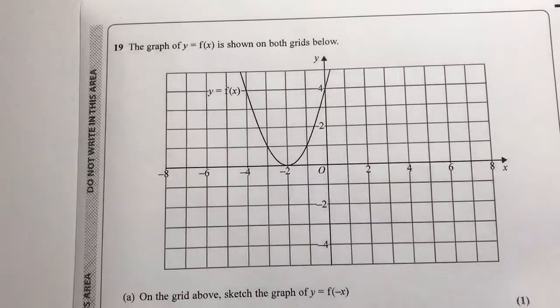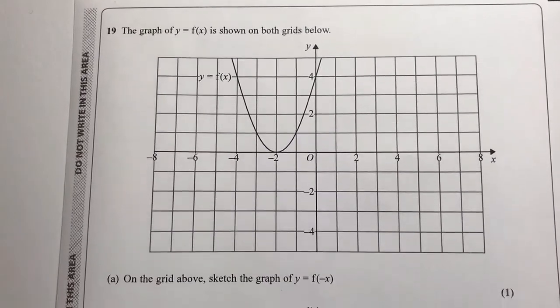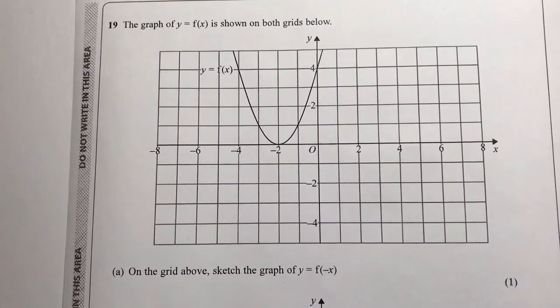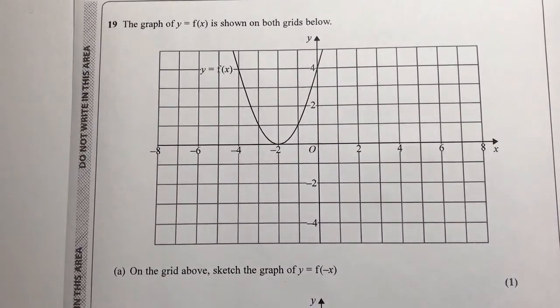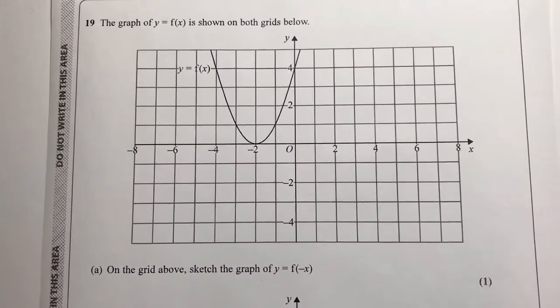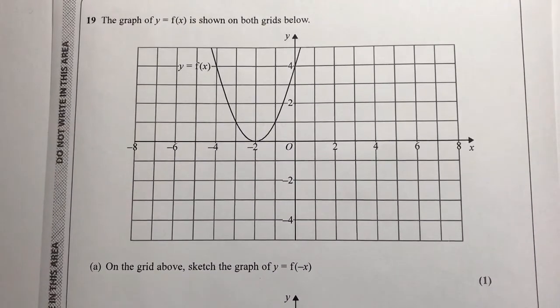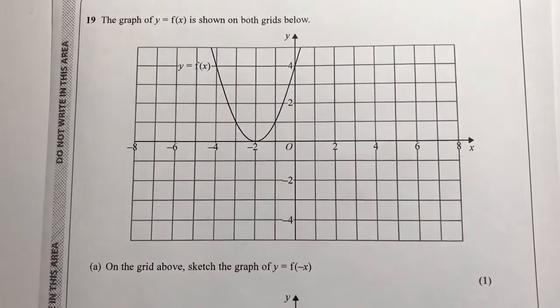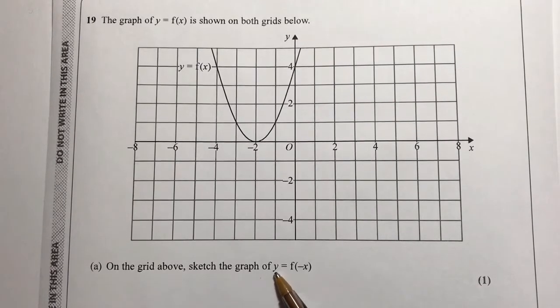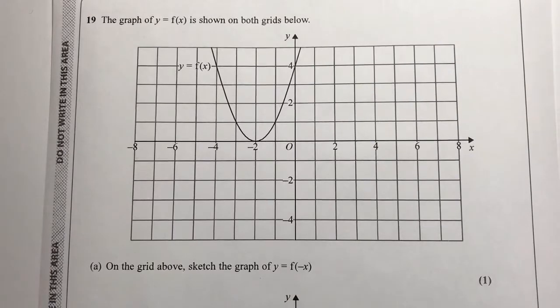Question 19 is just one of those questions where you either know it or you don't — though you could work it out. It's just one mark. Basically what they're saying is that this particular graph is the graph of y equals f(x). On the grid above, sketch the graph of y equals f(-x). In other words, all the x values have become negative values.